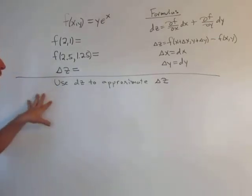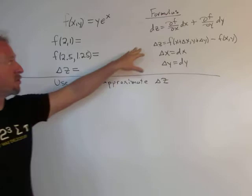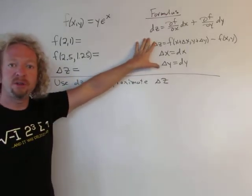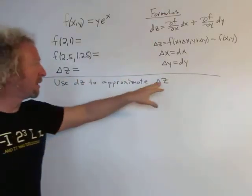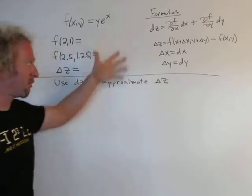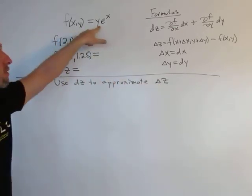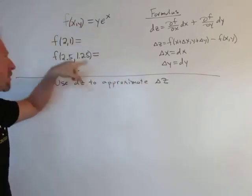Hey everyone, today we're going to use the total differential of a function to approximate the change in z. We'll go through all the steps. We have a function of two variables, and it's broken down into steps.